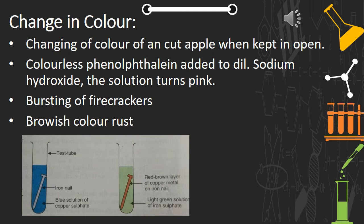The second example is colorless phenolphthalein. Phenolphthalein is an indicator used to check whether a solution is a base or acid. When colorless phenolphthalein is added to dilute sodium hydroxide — which is a base — the solution turns pink. So here again you see the change in color.